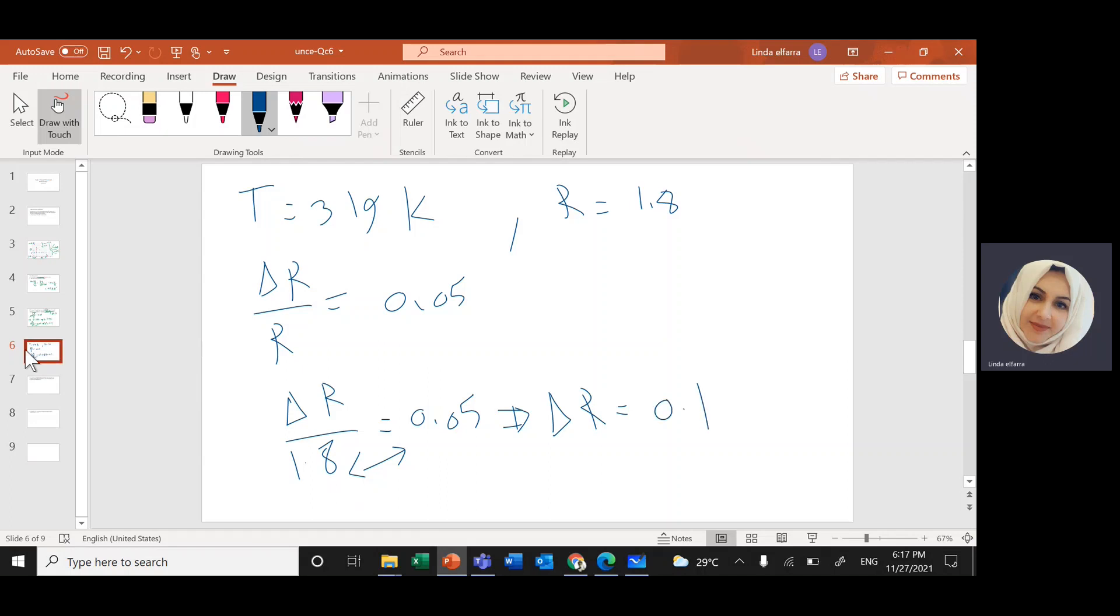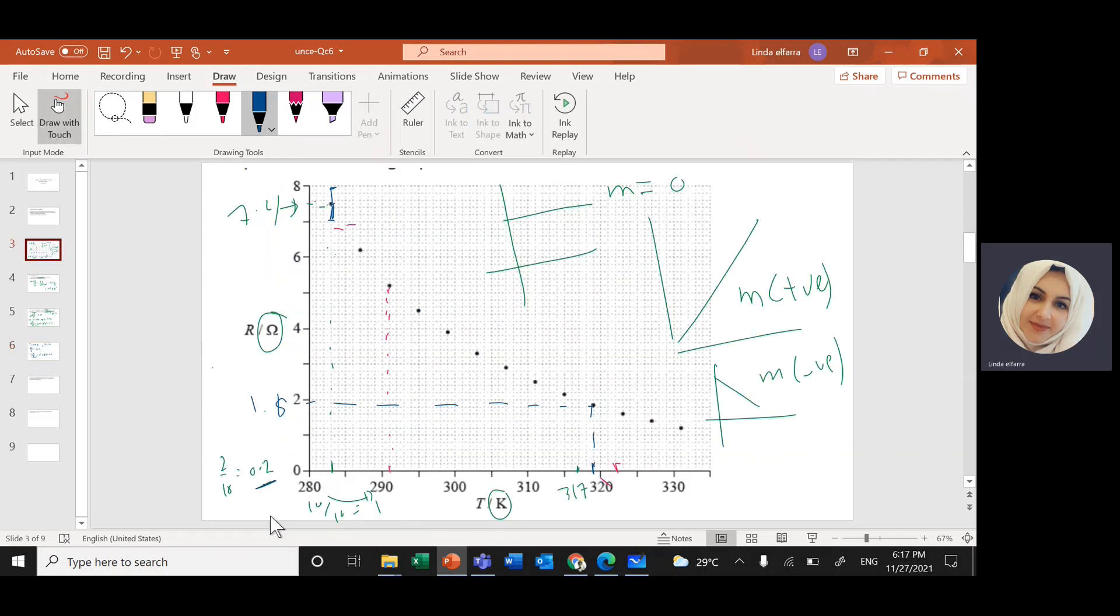It means if each square up is 0.2. So 0.1, it will be half a square, half a square up. So you will go at this point, this point here, and you will draw half a square up, one line here up and down half a square.